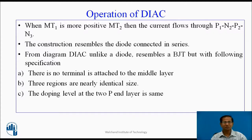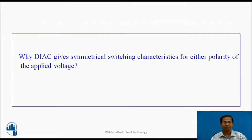The construction resembles diodes connected in series. Unlike a diode, Diac resembles a BJT but with the following specifications: there is no terminal attached to the middle layer, the three regions are nearly identical in size, and the doping level at the two end layers is the same. That is why the Diac gives symmetrical switching characteristics for either polarity of the applied voltage.